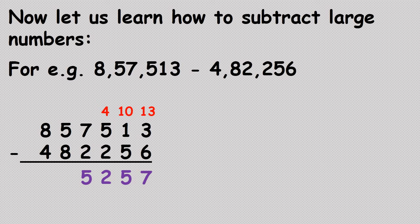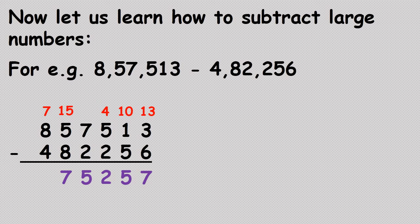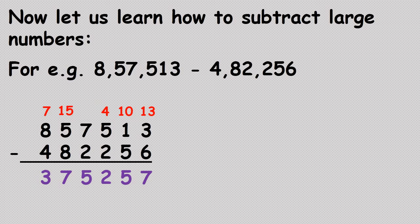Next, five minus eight: we cannot subtract, so we borrow from eight — eight becomes seven and five becomes fifteen. Fifteen minus eight is seven. The last digit: seven minus four is three. So the answer is three lakh seventy-five thousand two hundred and fifty-seven.